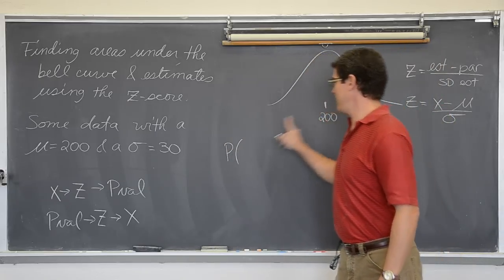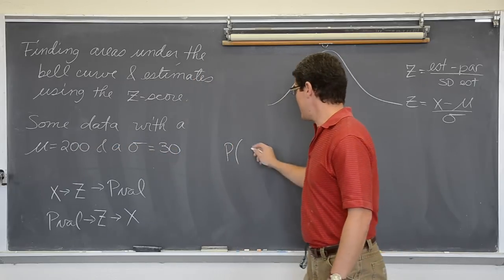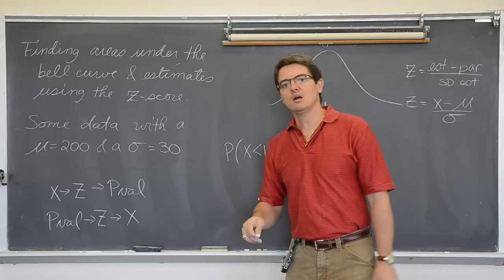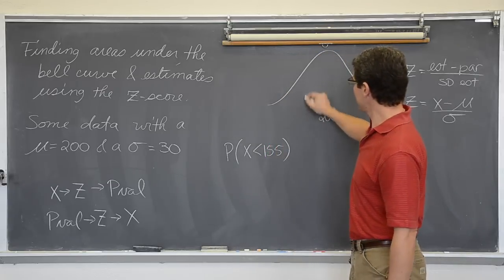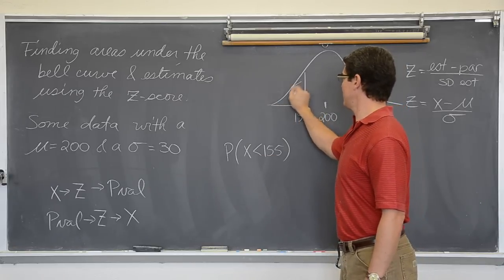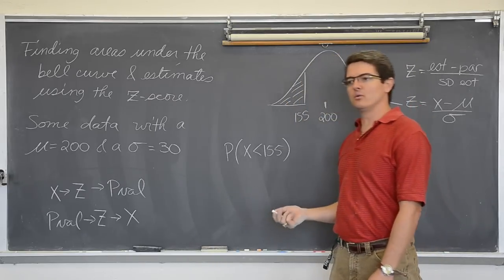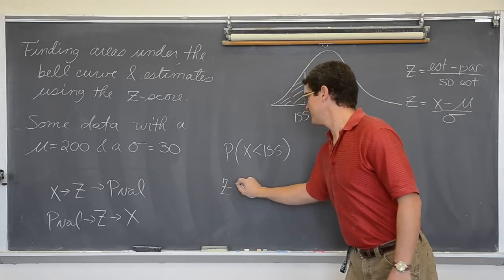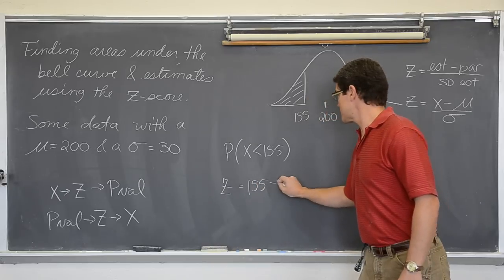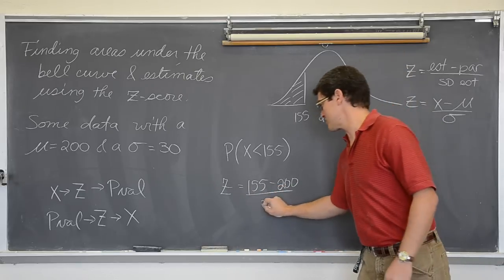Like what is the probability in this distribution with a mean of 200 and a standard deviation of 30 that x is less than 155? Well I have 155 here and I want to find the area to the left of that value. So I am going to do z equals the statistic which is what the question is about minus the parameter over the standard deviation of the statistic which is 30.